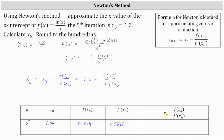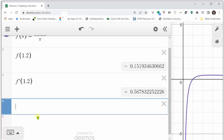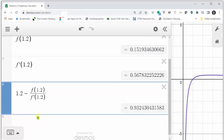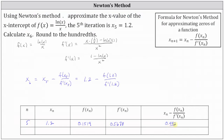Now we determine x₆ by computing 1.2 minus f(1.2) divided by f′(1.2). In Desmos cell four, we enter 1.2 minus f(1.2) divided by f′(1.2), which gives approximately 0.9324 to four decimal places. Rounding to the hundredths place, x₆ is approximately 0.93.